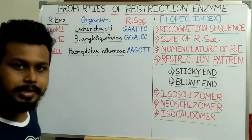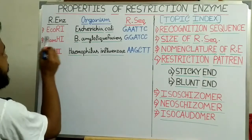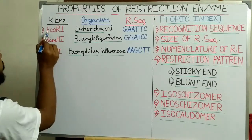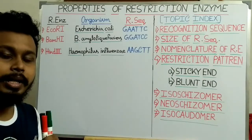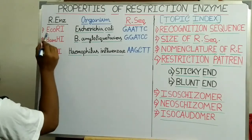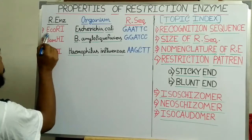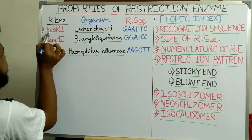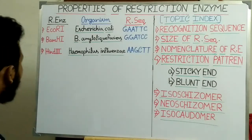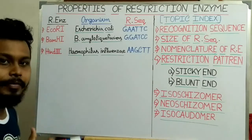Now the question is: what does the name of these restriction enzymes signify? I want to define the significance of this name — that is, the nomenclature. The first capital letter: for EcoRI that is E, for BamHI that is B, and for HindIII that is H. What does this capital letter signify?